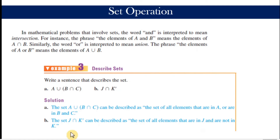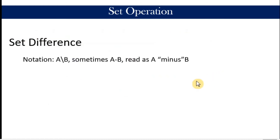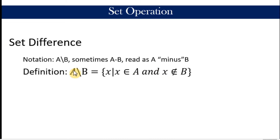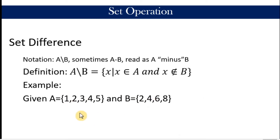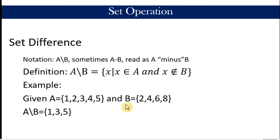The third operation is called set difference. We may use this notation or this one, read as 'A minus B.' By definition, the difference of two sets is the set containing all the elements of A that are not in B. For example, given two sets, A minus B is the set containing one, three, and five. One is an element of A but not an element of B, so it's included. We remove all elements found in B, so we remove two and four. That's the result.